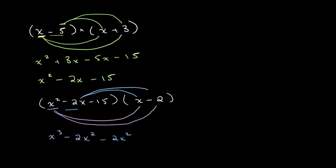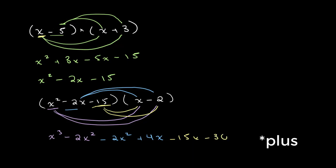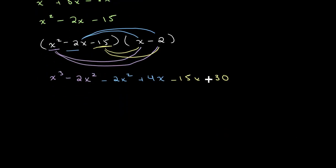Then we also multiply minus 2x with minus 2, which gives us plus 4x. For minus 15, we multiply it with x, which gives us minus 15x, and then minus 15 times minus 2 gives us plus 30. Now we simplify: x cubed is our only x cubed term. We have minus 2x squared and minus 2x squared, which gives us minus 4x squared. We have plus 4x minus 15x, which gives us minus 11x. And then we have plus 30.